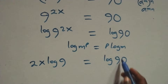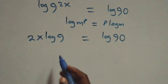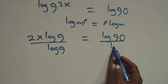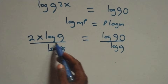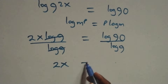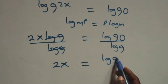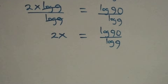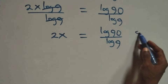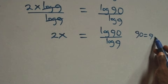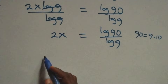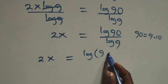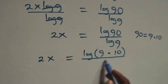Next, we divide both sides by log 9. On the left side, log 9 cancels, and we have 2x equals log 90 over log 9. We can express 90 as 9 times 10, so this becomes 2x equals log of 9 times 10, all over log 9.